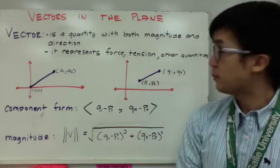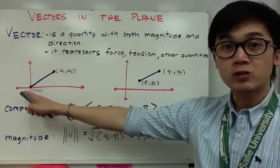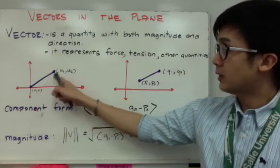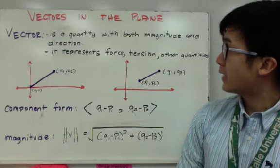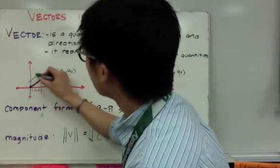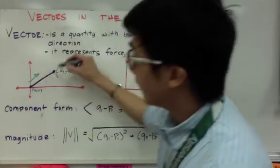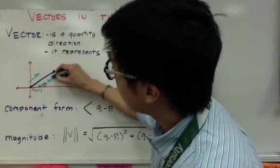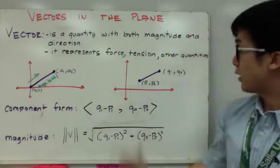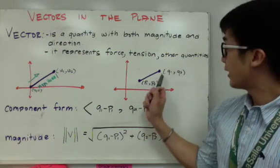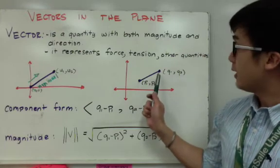Now I have two illustrations of a vector: one in standard form and one vector on a plane. The standard form vector has its initial point at the origin, which is (0, 0), and the terminal point is denoted by u sub 1 and u sub 2. This is a vector because it has magnitude and direction — the direction is indicated by the arrow, and the magnitude is the length of the vector. For the second illustration, the initial point is at p1, p2, and the terminal point is at q1, q sub 2. The initial point is where the vector starts, and the terminal point is where it ends.